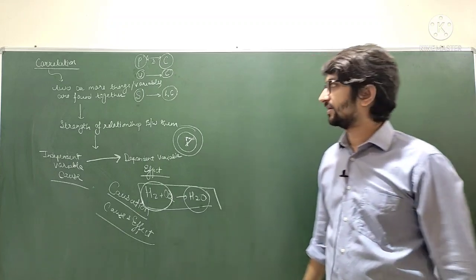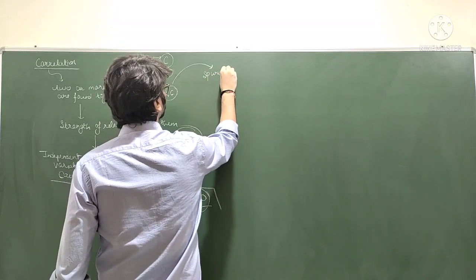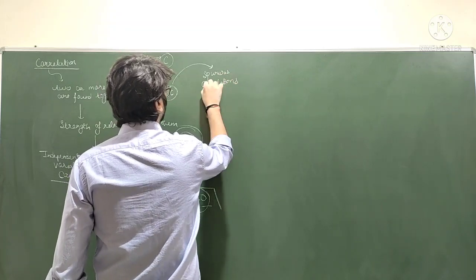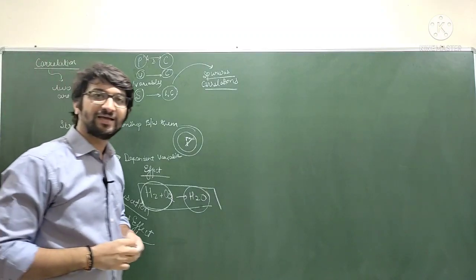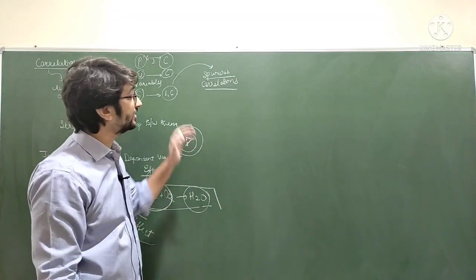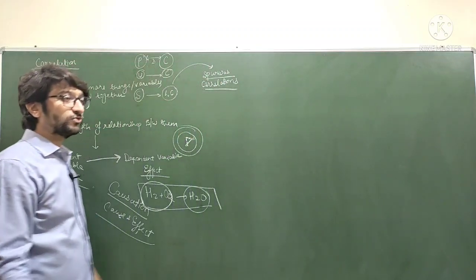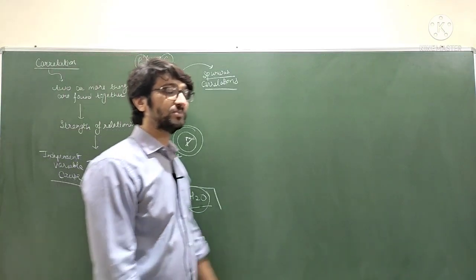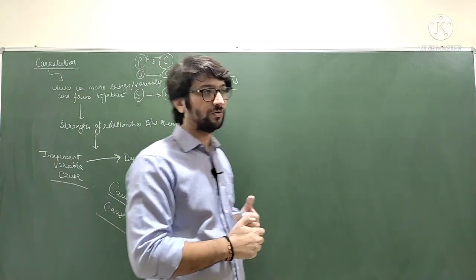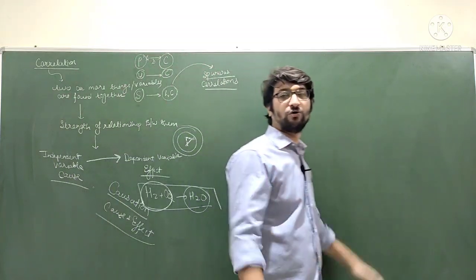But some relations are what we call spurious correlations — two events or variables are found together but one might not be causing the other. The relationship between them might not strongly exist, or might not exist at all. Even so, because they are found together, a scientist could sometimes misconceive and say one is the cause and another is the effect — that is a spurious, false correlation.